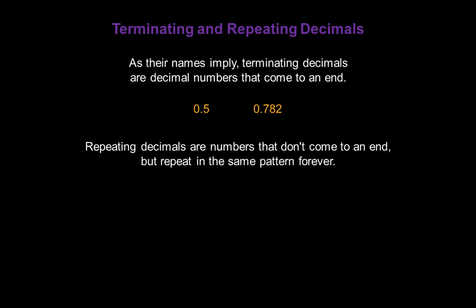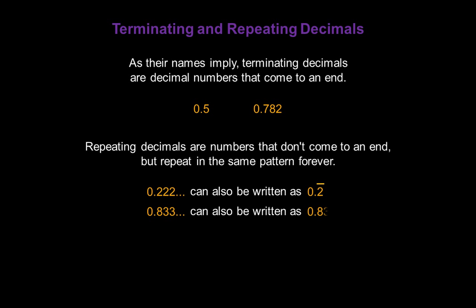Repeating decimals are numbers that don't come to an end, but repeat in the same pattern forever. For example, 0.222 where the 2 keeps repeating — that could also be written as 0.2 with a line above the repeating 2. 0.8333 where the 3s keep repeating can also be written as 0.83 with a line above just the 3. And 0.45454545 can also be written as 0.45 with a line above the repeating pattern of 4-5.